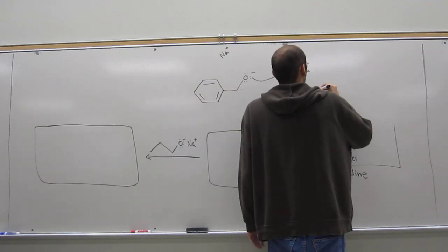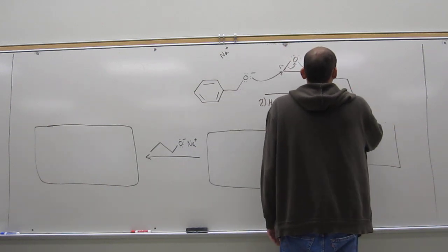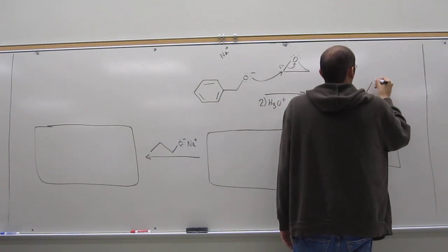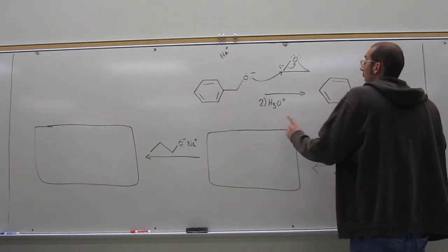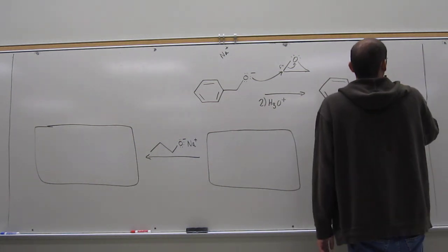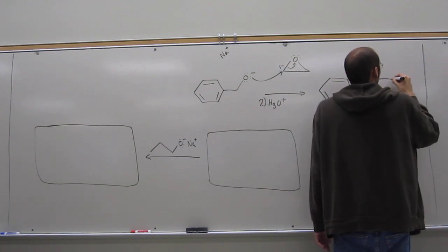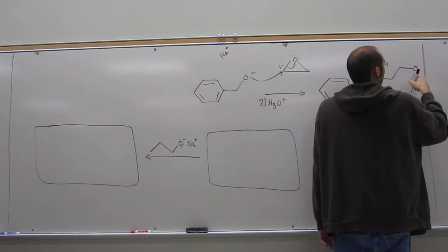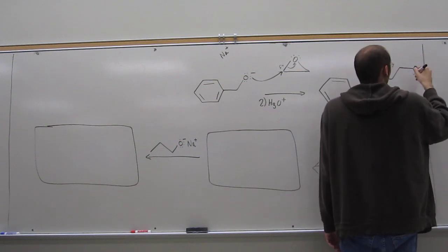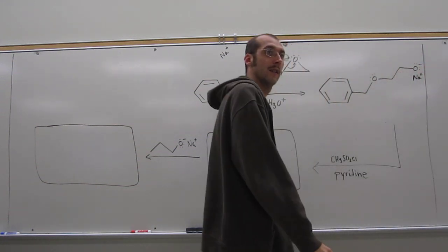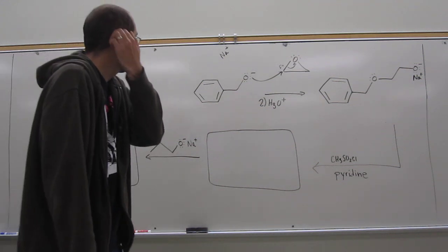Because of ring strain, there's this delta plus there, right? That makes it an electrophile. The nucleophile will attack it like that, opening up that ring due to the ring strain. And I didn't give myself enough room for that box. We've got to do the second step before we put anything in the box.